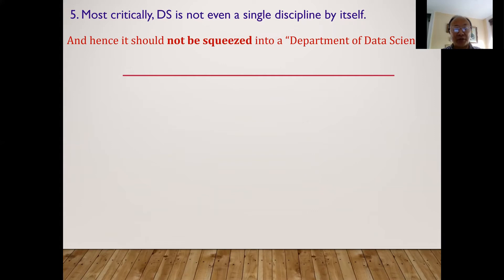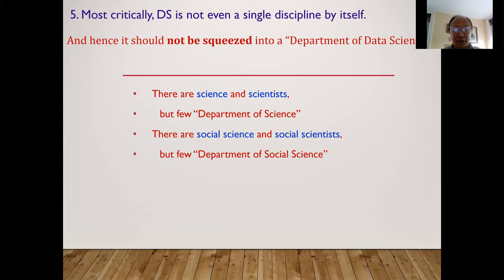Now I would argue that will be really a wrong unit to provide the best data science education. Imagine that you're trying to create a department of science. We all have heard about science and scientists. But rarely you have heard about the department of science. And same as for social scientists. Rarely you hear about the department of social science, whether the department of sociology, social work. But that's a branch of them. Similarly, there are humanities and humanists, but few departments of humanities.